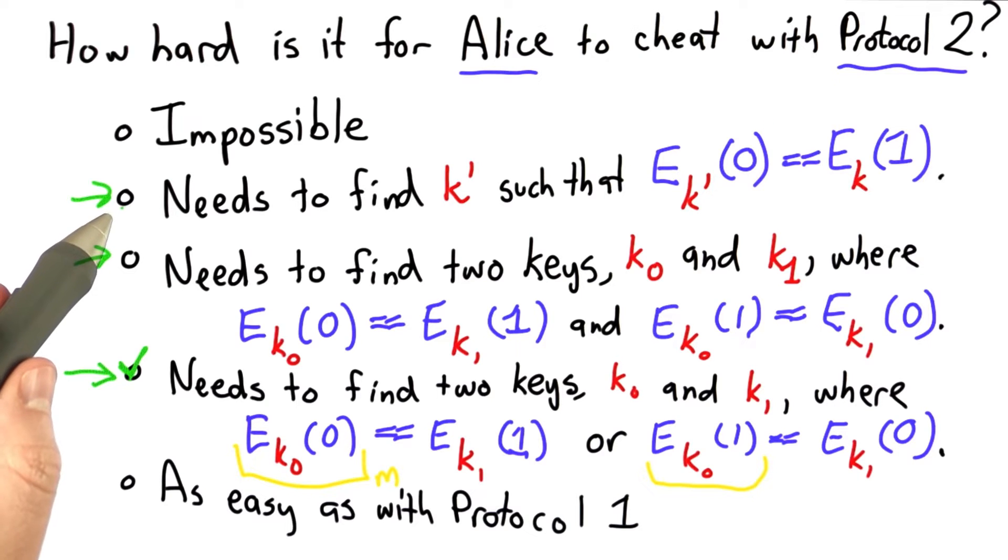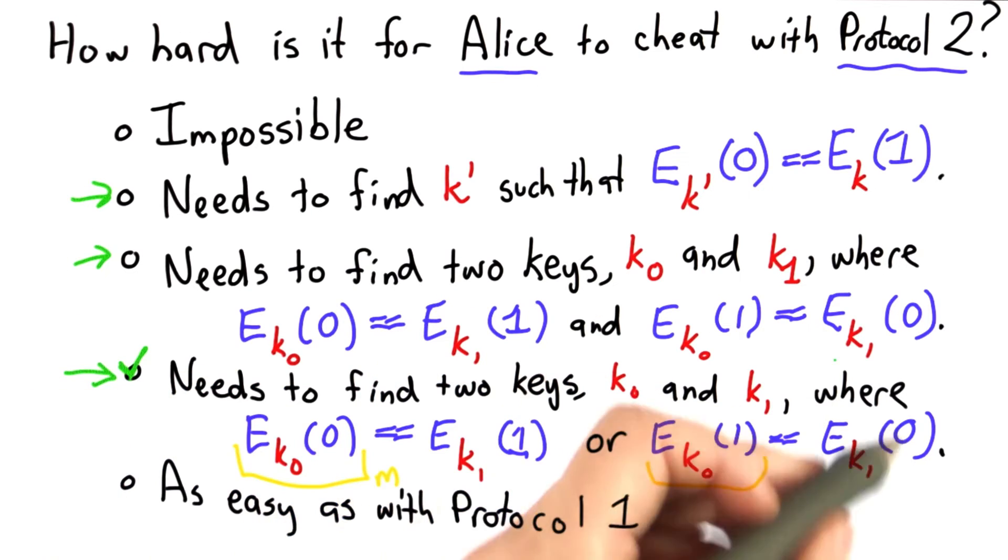But this is a harder thing to do than finding two keys that have this property. We might not know enough yet to be able to be sure that this is harder than that, but we know it's certainly no more difficult, and this could be easier, and we'll see that in fact it is easier.